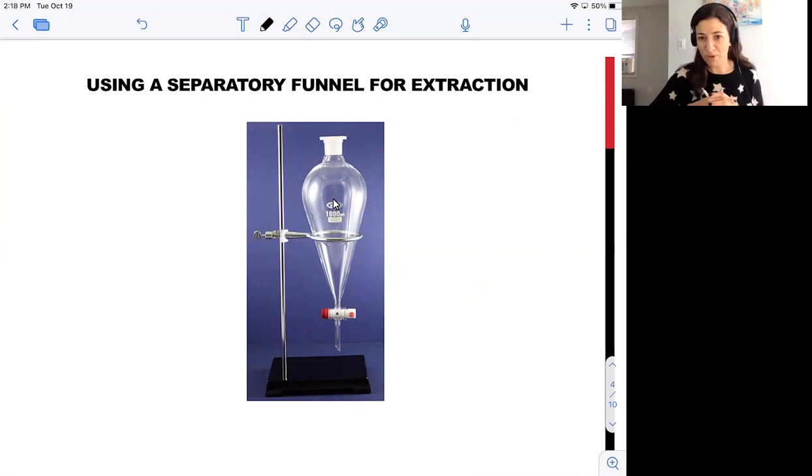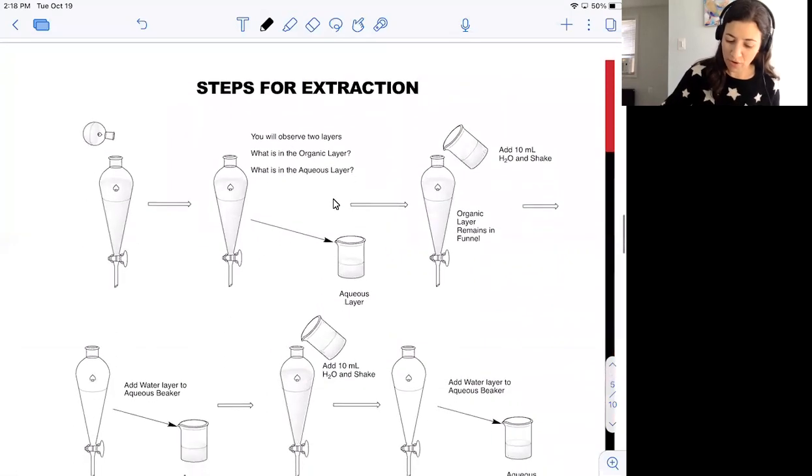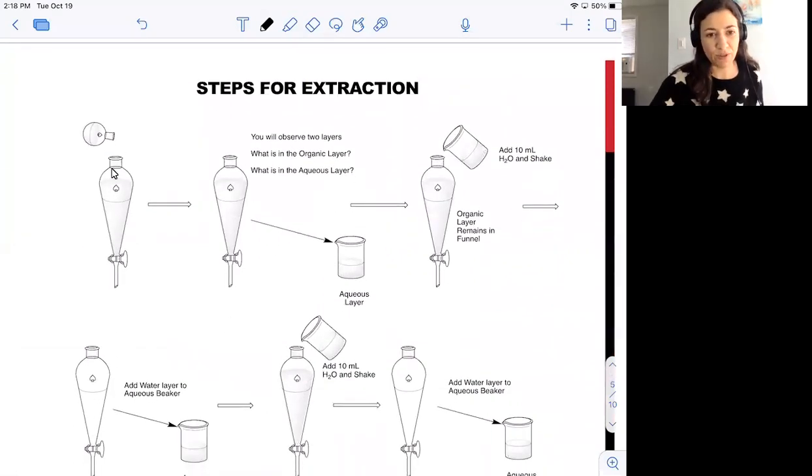Two videos are going to be posted on our Sakai site of one of your Wellesley peers putting a separatory funnel into action, and I encourage you to take a look at them. When we pour our reaction mixture into the separatory funnel, which has this conical shape and a stopcock which can be opened and closed to allow the release of liquid, the water solvent will form a separate layer from the organic products, which may include unreacted starting material as well as the bromo and chlorohexanes that you might be forming.